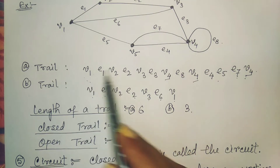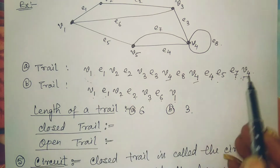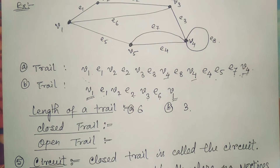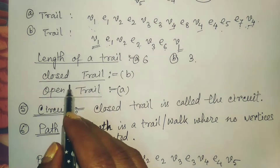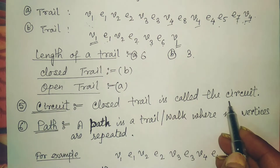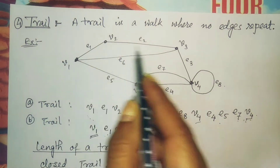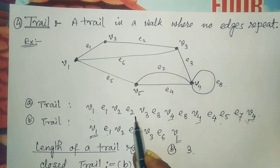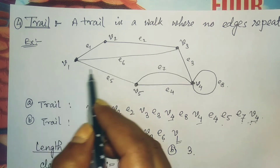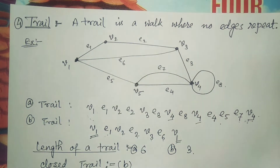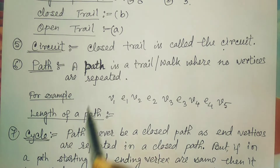If in a trail the starting and ending vertices are different, it is called an open trail. If the starting and ending vertex are the same, it is called a closed trail. An important point: a closed trail is called a circuit. That means if you start from a vertex, traverse, and return to the same vertex — with vertices possibly repeating but no edges repeated — then it forms a circuit.